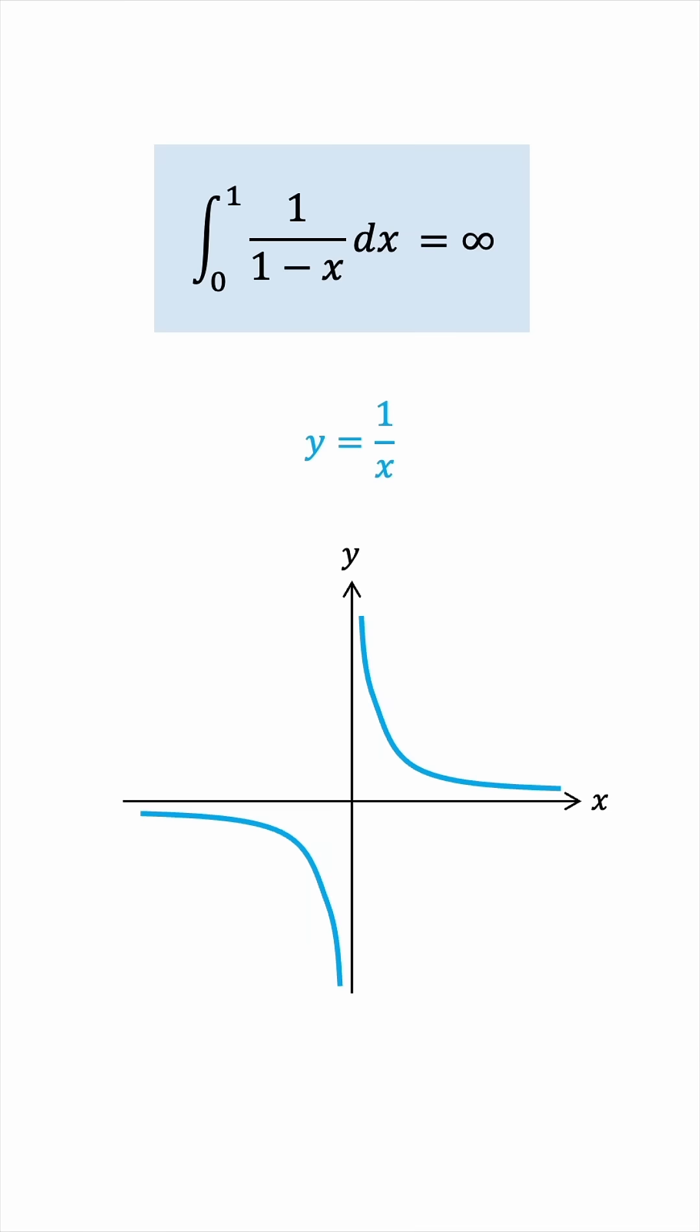To get the integrand from this parent function, we'll start by adding 1 to the denominator, which is graphically a horizontal translation of 1 unit to the left. So, the vertical asymptote is now at x equals negative 1, instead of being the y-axis.